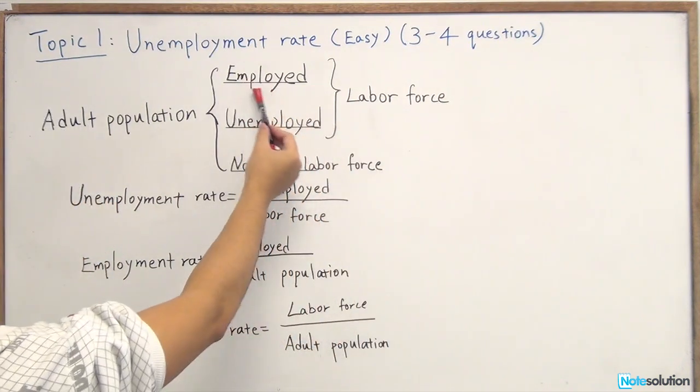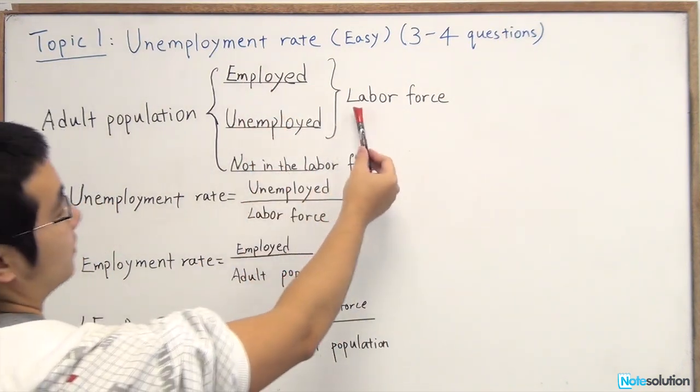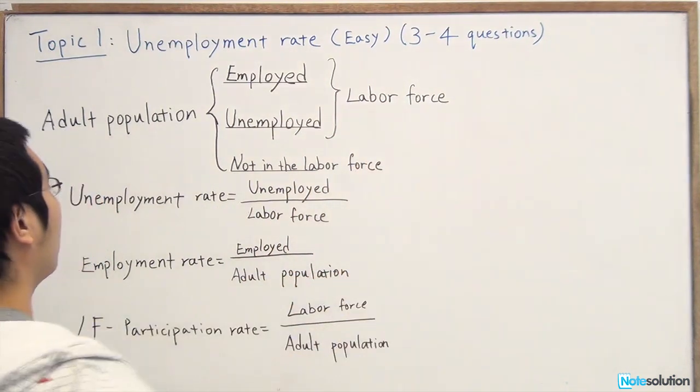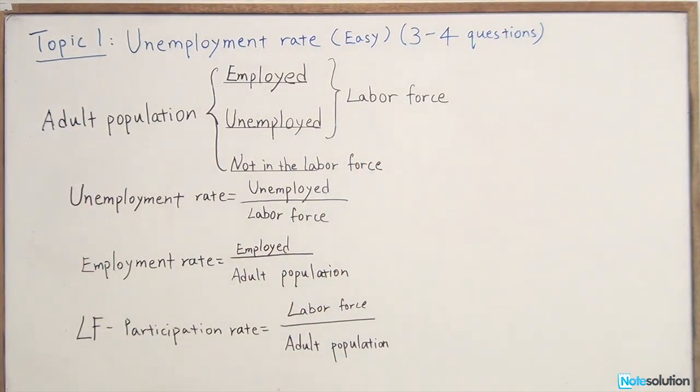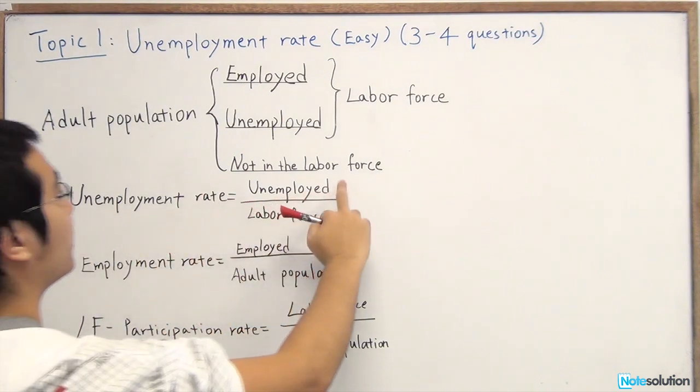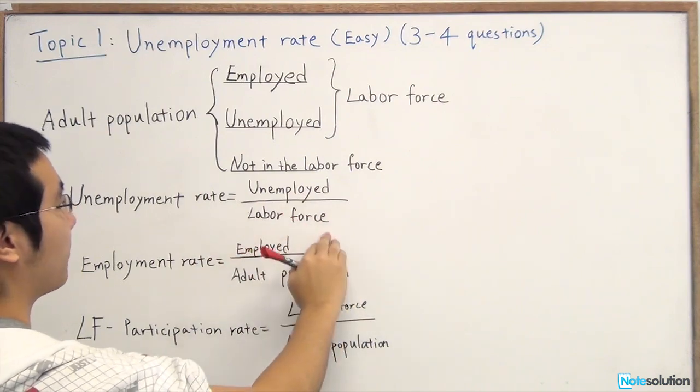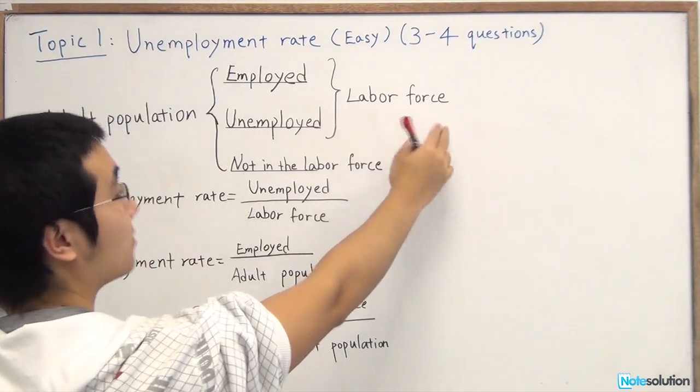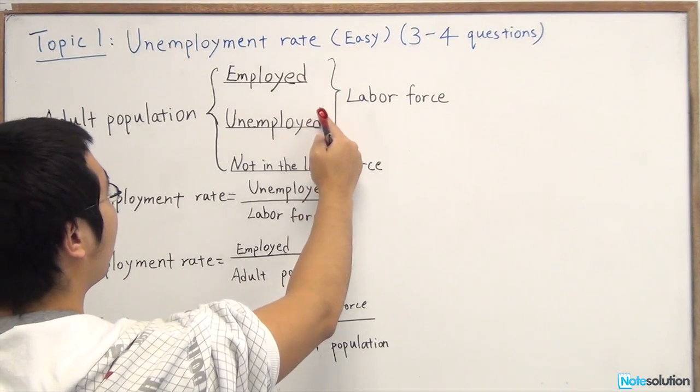The combination of the employed and the unemployed makes up the labor force. Let's get down to the calculation part, which is directly related to your midterm exam practice questions. For calculating the unemployment rate, we're using the unemployed number divided by the labor force, which as you can see, is built up by the employed and unemployed.